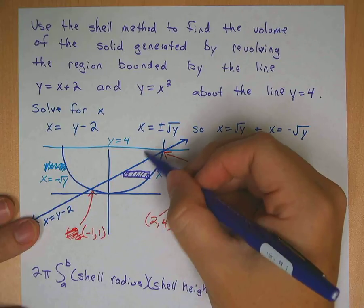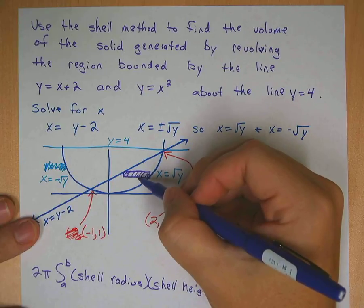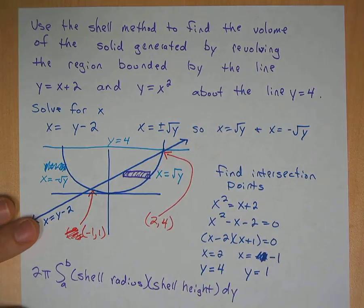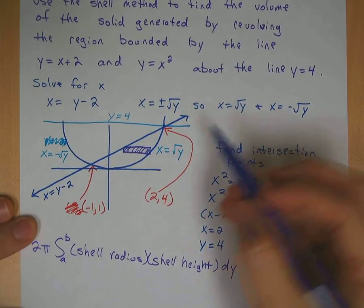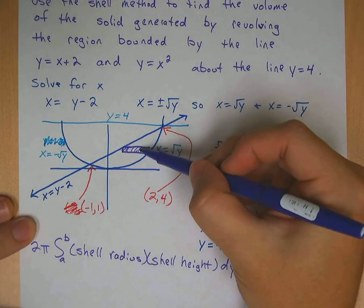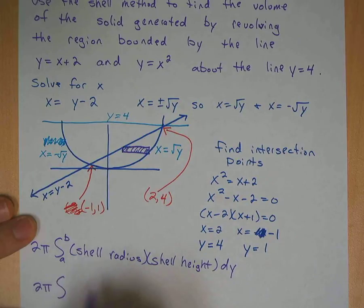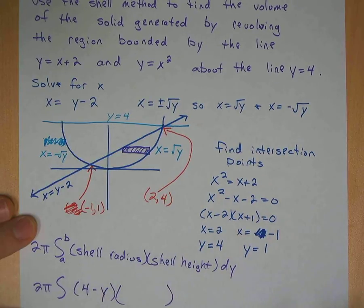We'll just say that that's some y value. We don't know what it is, because it's going to change depending on where the shell is. So that shell radius is going to be 4 minus some y value. So this is 2 pi. We'll talk about our limits in a second. It's going to be 4 minus y.